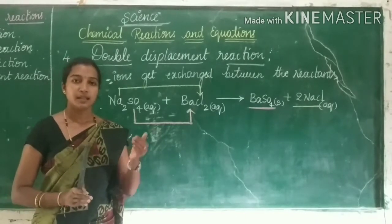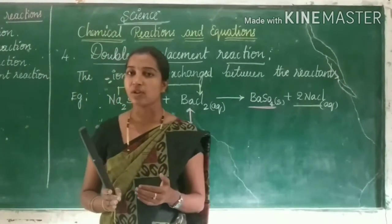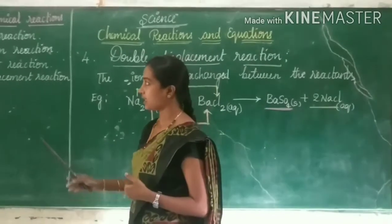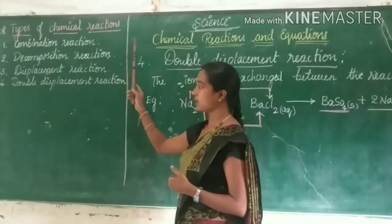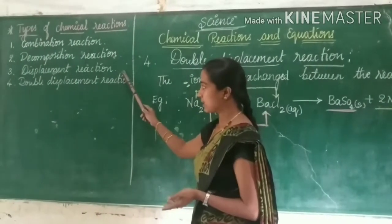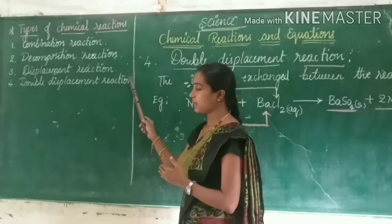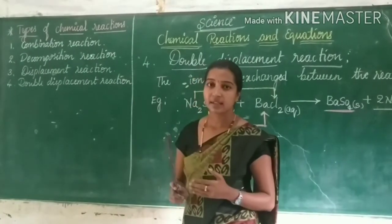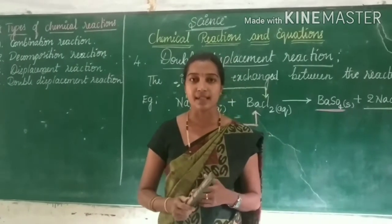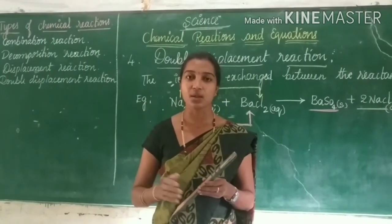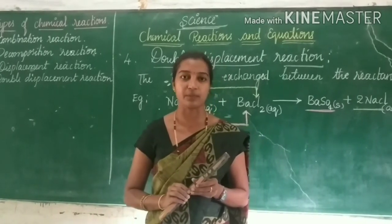Okay children, in this class we discussed about the types of chemical reactions: combination reaction, decomposition reaction, displacement reaction, and double displacement reaction. I think all of you understood. In your next class, we will discuss the remaining concepts of this chapter. Thank you.